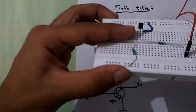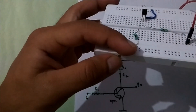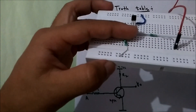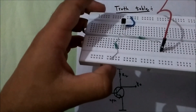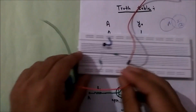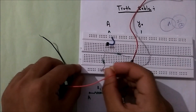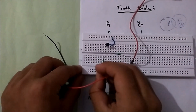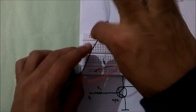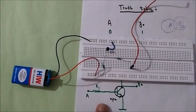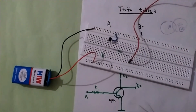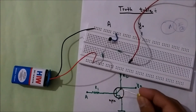From the collector I've connected it to positive supply. Through the base I'll give a logic input, and the middle terminal — the emitter — is directly grounded. Now connect the battery. I'll give a positive supply here.